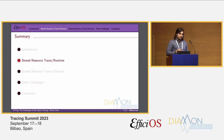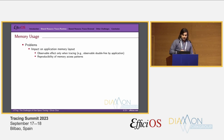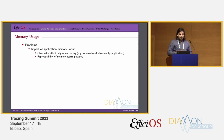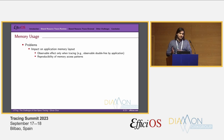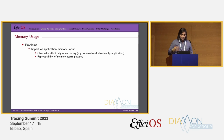For memory usage, the problem is that the tracer is like a sub-program within the program itself, so it impacts the memory layout. For example, some users could observe a double free by the application — not the tracer. The application was actually doing the double free but not getting the error without the tracer present. Because the memory access pattern has changed, the double free can appear, and the user reports it as a bug from the tracer, which it is not. You also change the reproducibility of memory access patterns, making bugs harder to reproduce.